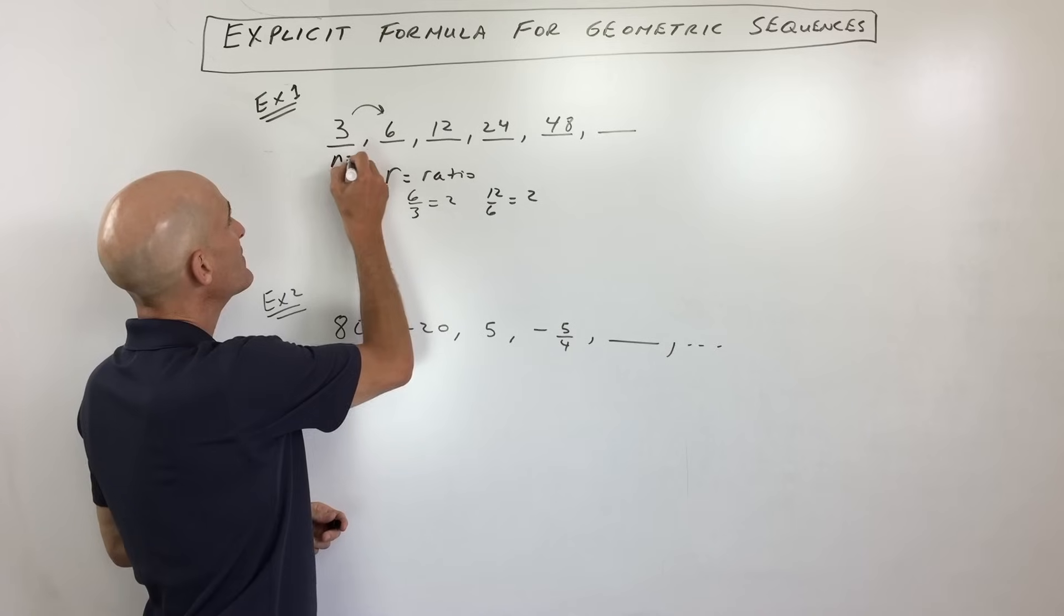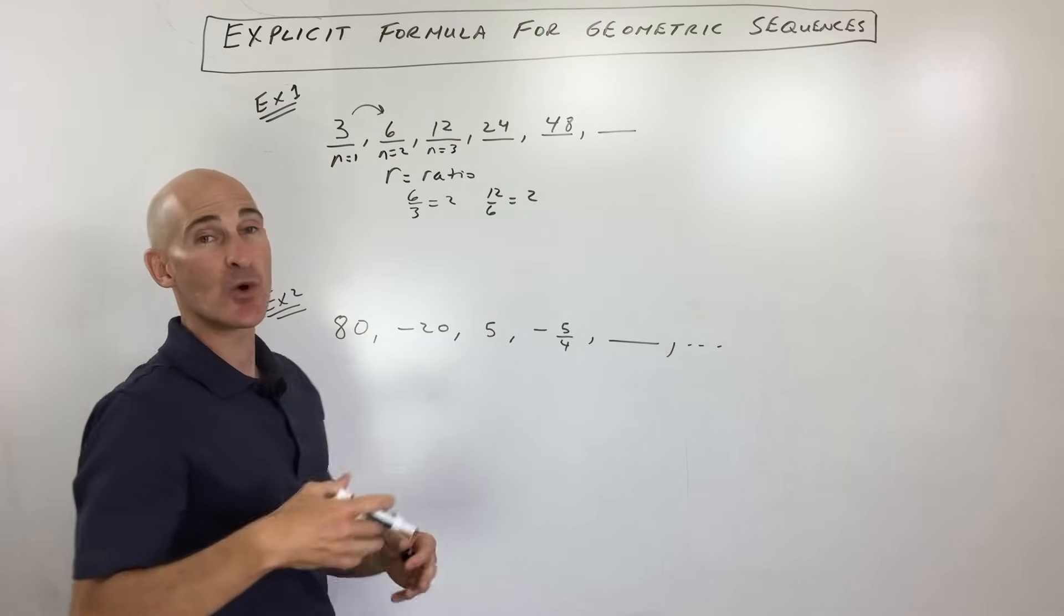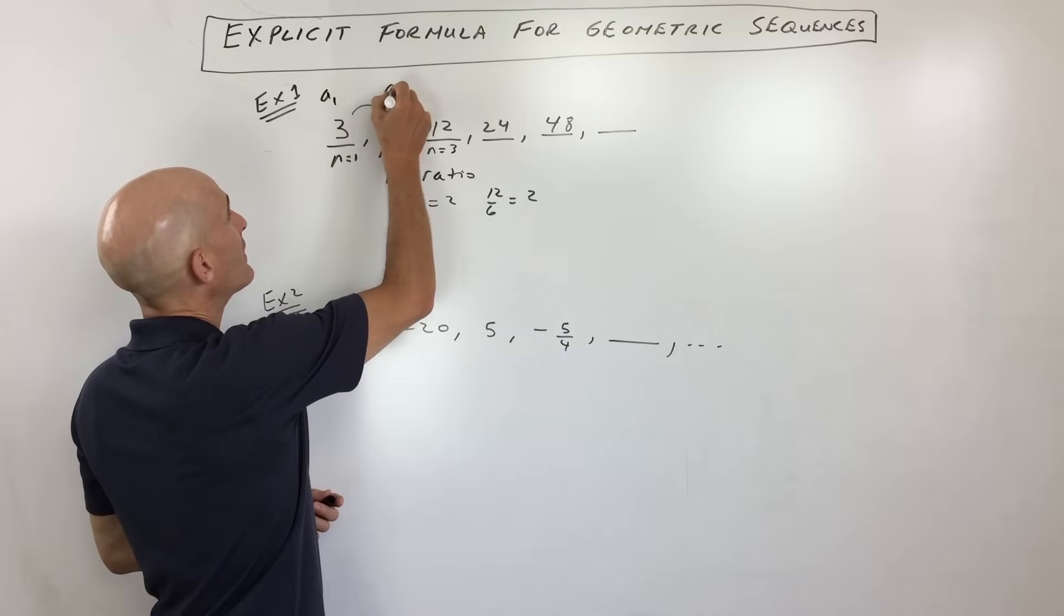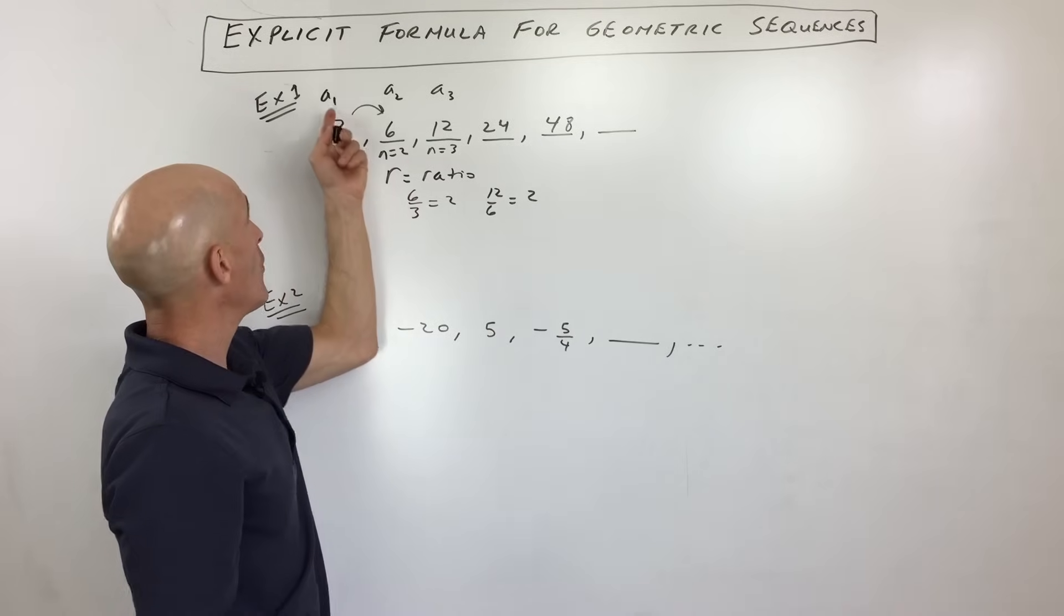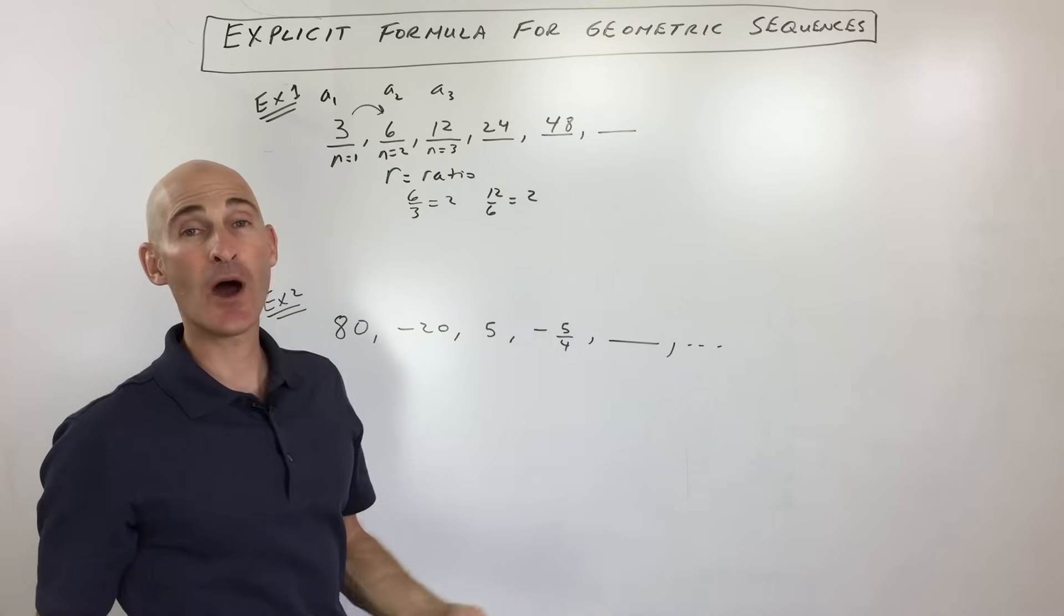Now, another thing I want to point out is that this is n equals 1, this is n equals 2, n equals 3. That tells you what term you're on. And then if you look at a sub 1, a sub 2, a sub 3, etc., that's the value of that term. So meaning, what is the value of the first term? 3. What is the value of the second term? 6. And so on.